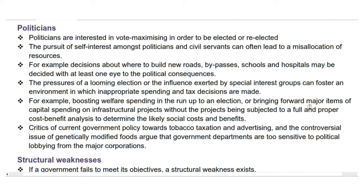Next up is politicians. Politicians are interested in vote-maximizing in order to be elected or re-elected. The pursuit of self-interest amongst politicians and civil servants can often lead to a misallocation of resources. For example, decisions about where to build new roads, bypasses, schools, and hospitals may be decided with at least one eye to the political consequences. The pressures of a looming election or the influence exerted by special interest groups can foster an environment in which inappropriate spending and tax decisions are made — for example, boosting welfare spending in the run-up to an election, or bringing forward major capital spending on infrastructure without a full cost-benefit analysis. Critics argue that government departments are too sensitive to political lobbying from major corporations on issues such as tobacco taxation and genetically modified foods.